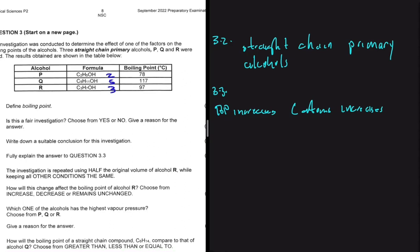The trick here in this question is that they put P of two carbons, then Q of five carbons, and then lastly R of three carbons. But if you put them in order of the number of carbons, you will clearly see that as the number of carbon atoms increases, the boiling point also increases.